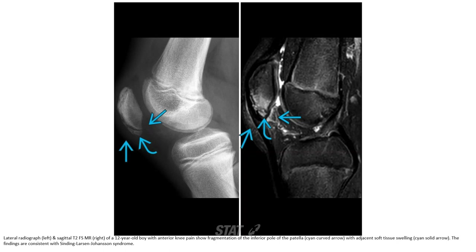The lateral radiograph on the left and sagittal T2 fat-saturated MRI on the right show a child with anterior knee pain. There is fragmentation of the inferior pole of the patella with adjacent soft tissue swelling. The findings are consistent with Sinding-Larsen-Johansson syndrome.